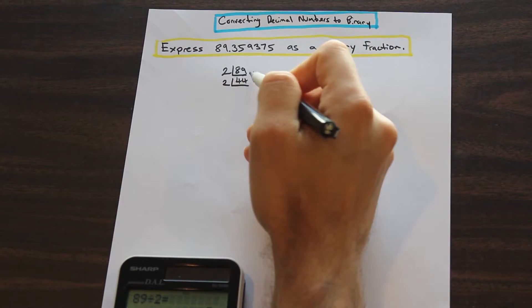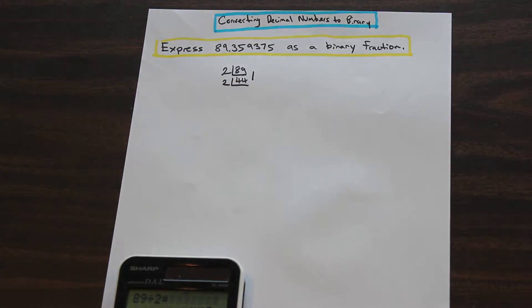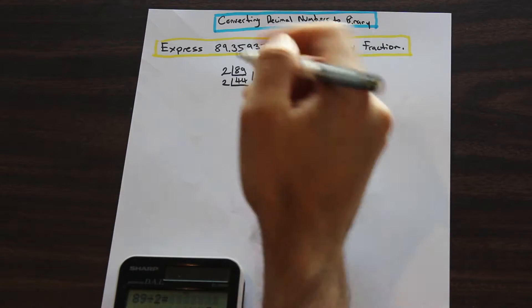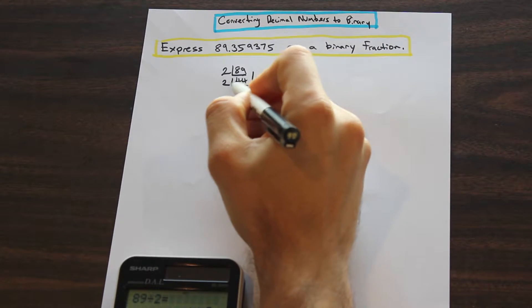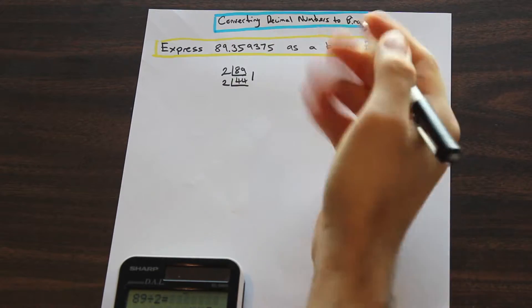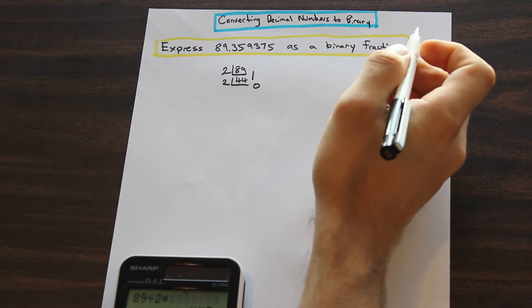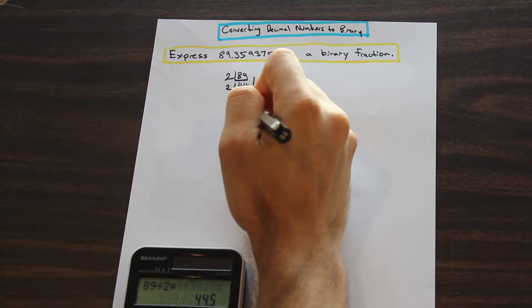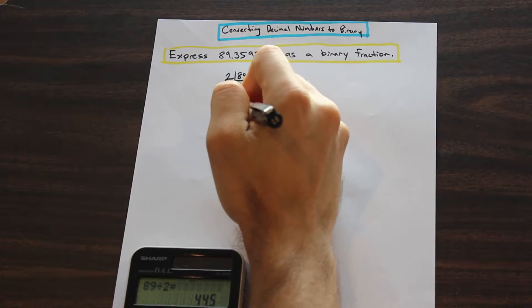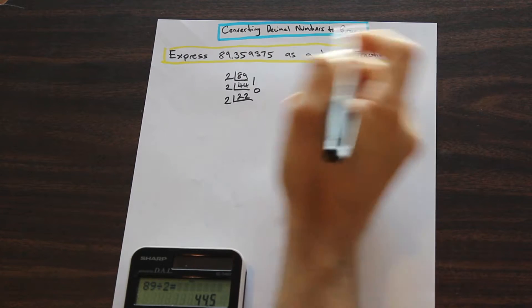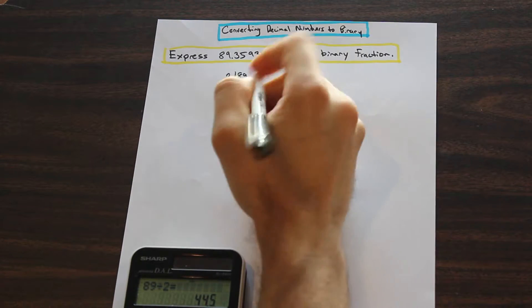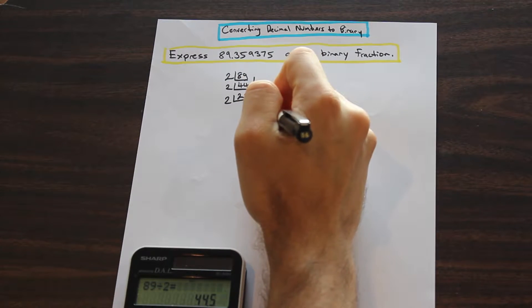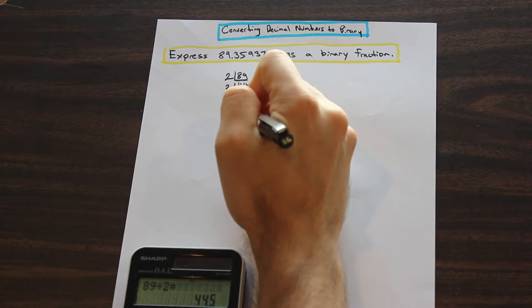We're just going to keep doing that. We're going to divide 2 into 44 until we get to the end of the process. We're just going to keep writing the remainder on the right. If the remainder is 1, you only have 2 remainders. It's either going to be 1 or 0 when you're dividing by 2. So if it's 1, you're going to write 1 over here, and if it divides evenly in this case, you're going to write 0 on the right. 44 divided by 2 is 22.